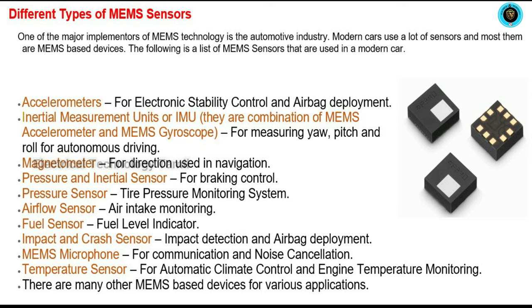The MEMS sensor is used in all places. Let's see an example — a modern car. First, the accelerometer, for electronic stability control and airbag deployment. Next, the inertial measurement unit or IMU, which is a combination of a MEMS accelerometer and MEMS gyroscope.